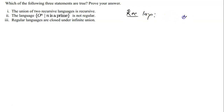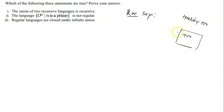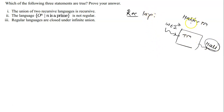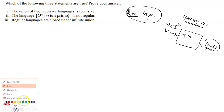A recursive language is a language which is accepted by a halting Turing machine. A halting Turing machine is a Turing machine which will always halt — whatever string w belonging to sigma star you give, this Turing machine will always halt on all strings. The language of such a Turing machine is called a recursive language.